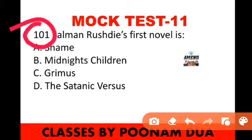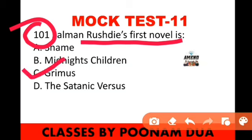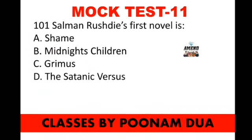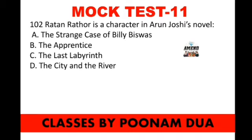Question number 101 is from mock test number 11 — we have covered 100 questions in previous 10 videos. Salman Rushdie's first novel is Grimus, published in 1975. It was part of science fiction but was generally ignored by the public and critics. His next novel, Midnight's Children, published in 1981, was very successful for Salman Rushdie.